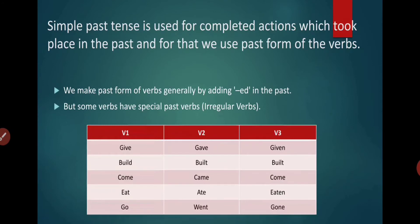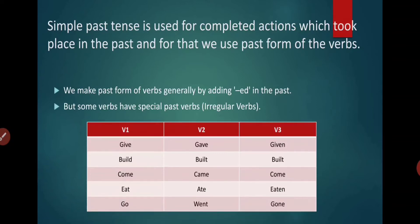So now let's understand the forms of verb. First form, second form and third form. First form is a present form. Second form is a past form and third one is past participle form. So give, second form will be gave. Karen gave us a gift in our wedding anniversary. So gave and then third form will be given. Build, built and third form is also built.